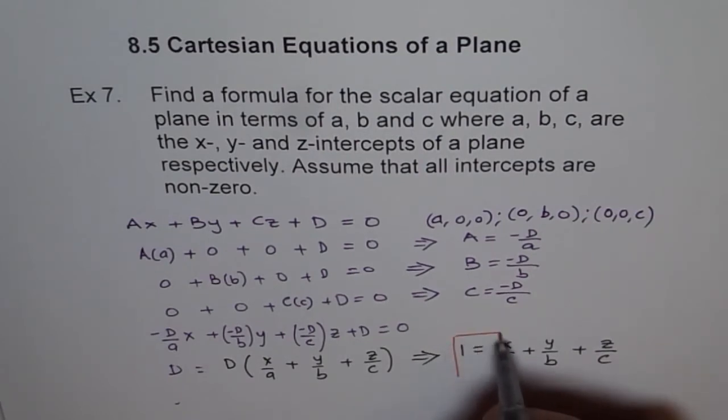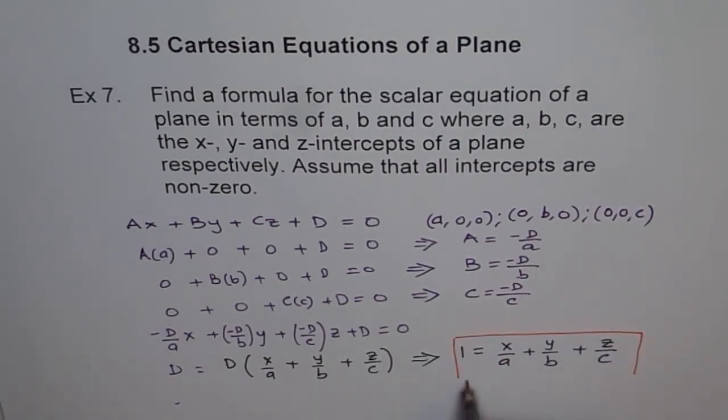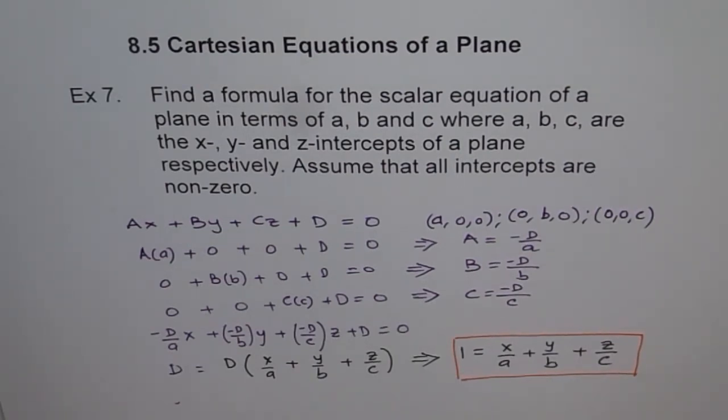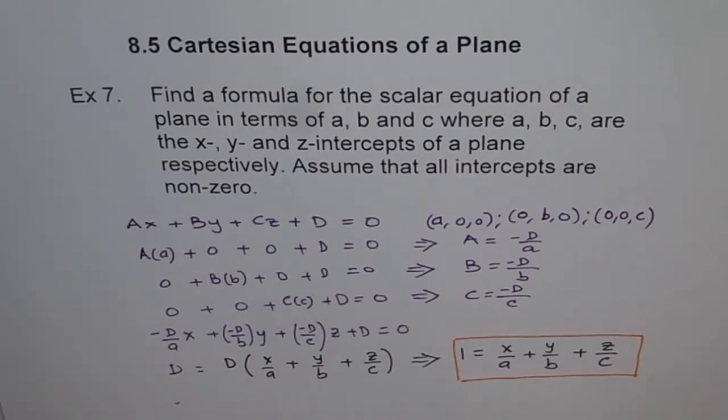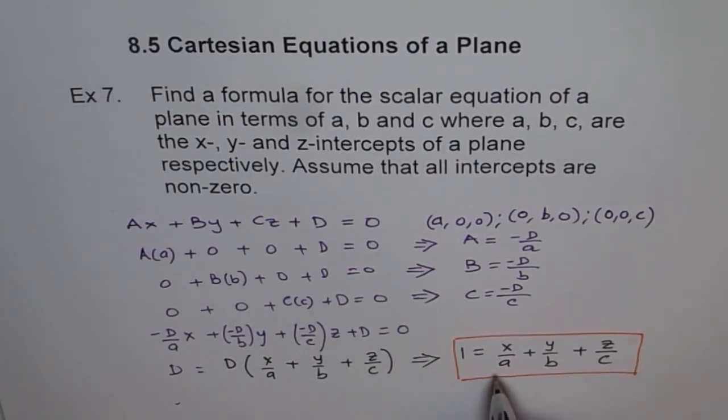You see, this is a very, very important equation. So X divided by X intercept plus Y divided by Y intercept plus Z divided by Z intercept is equal to 1. That is a huge and very important formula to be used. And remember here, of course, A, B and C cannot be 0.